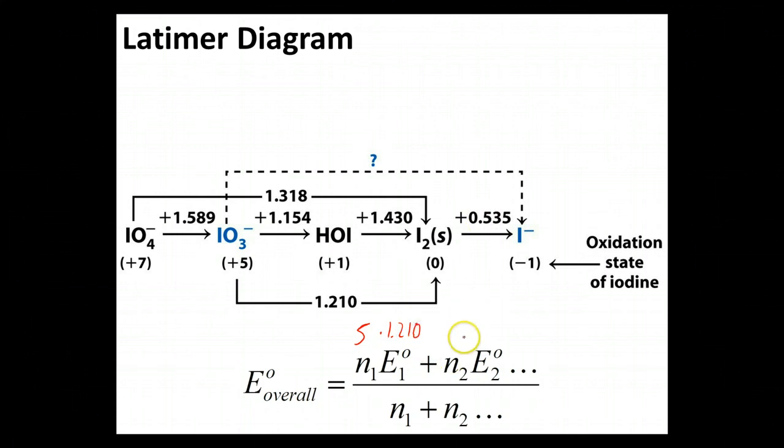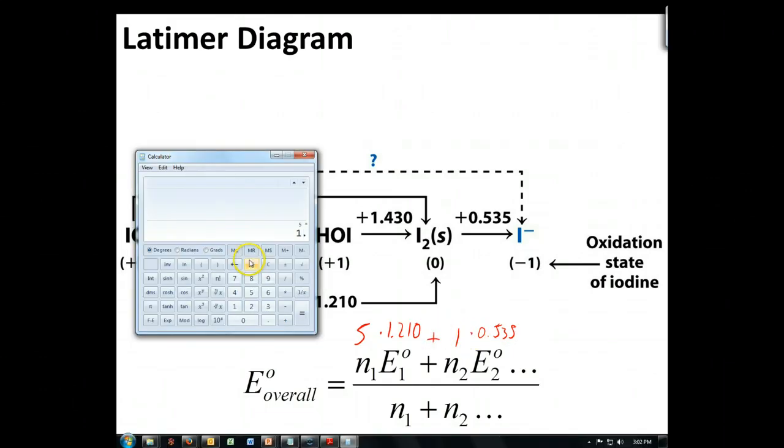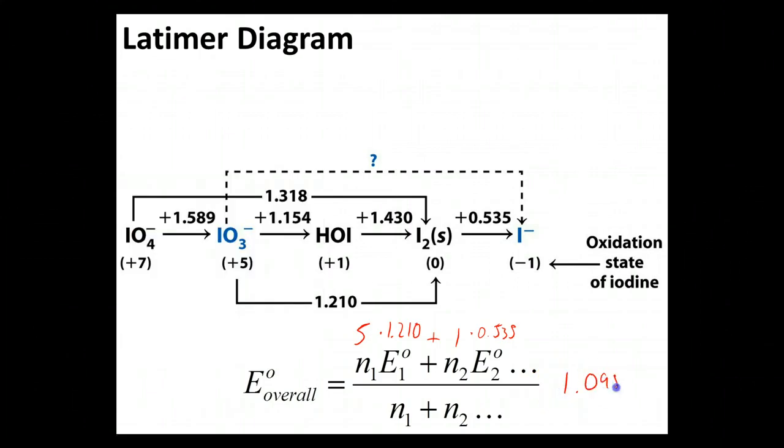Then my other one is going to be one electron and that's going to be 0.535. So, I'm going to multiply those and add them. So, I have 5 times 1.210 plus 1 times 0.535. So, I've got 6.585. Now, I'm going to divide that by the total number of electrons to get the whole way along and I see that that number is going to be six, five and one. So, that'll be divided by six. So, I anticipate that my E° overall will be 1.098 for this process.